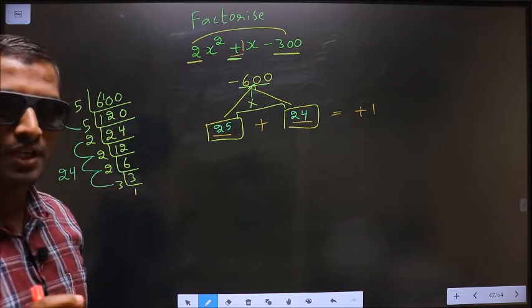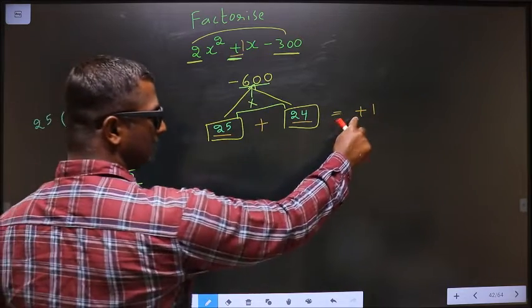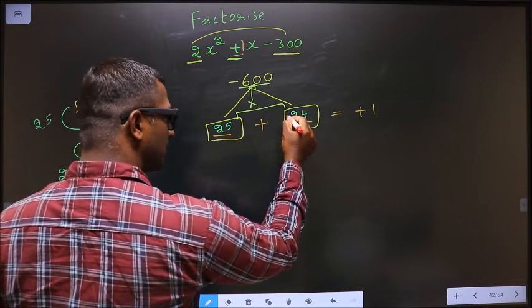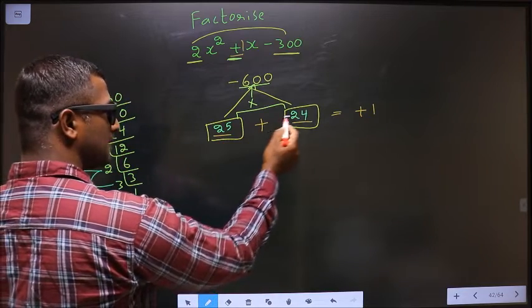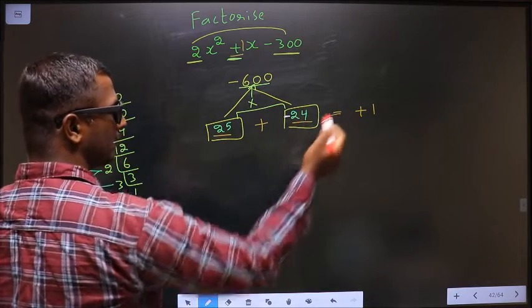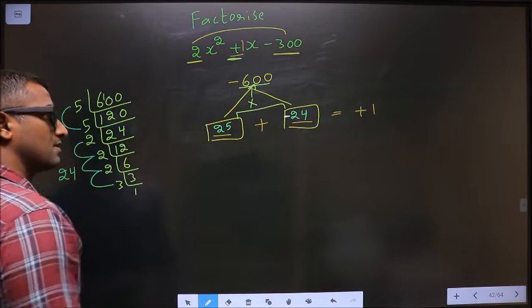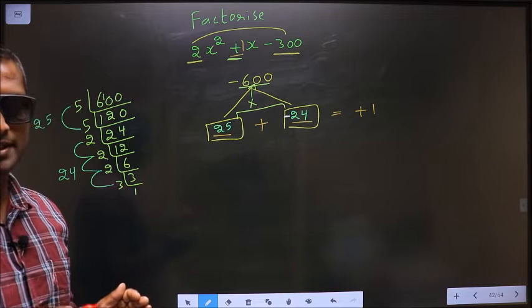Now we need to adjust the signs. To get +1, I should place minus before 24. Then 25 + (-24) = 1, and 25 × (-24) = -600. We have adjusted the signs correctly.